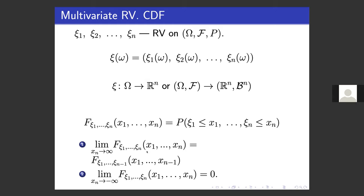This function has additional properties compared to the one-dimensional case. If any coordinate goes to infinity, we get just the cumulative distribution function for the random variable without that coordinate. The second property is that if any variable goes to minus infinity, then this function is zero. And combining with the property that it goes from zero to one, any function with these properties will define a random variable.